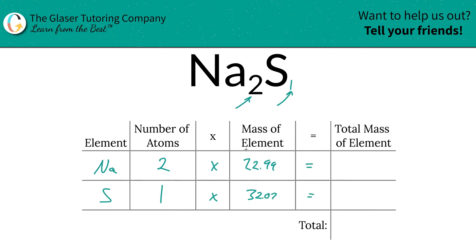And then to find the total mass of the element in the compound just simply multiply this row on across. So for sodium that's 45.98 units of mass, and then for sulfur 32.07 units.